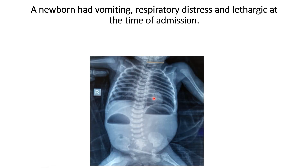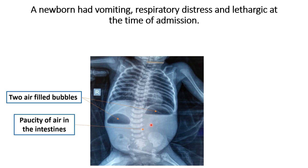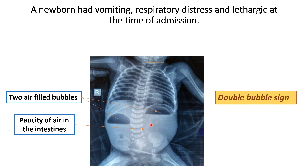This is the X-ray of a newborn admitted for vomiting, respiratory distress, and lethargy at the time of admission. In this X-ray, you can see only two air-filled bubbles are visible, and in the other part of the abdomen, there is no gas-filled distal bubble visible. This characteristic finding is labeled as the double bubble sign, and the abnormal radiological finding in this X-ray is the double bubble sign.